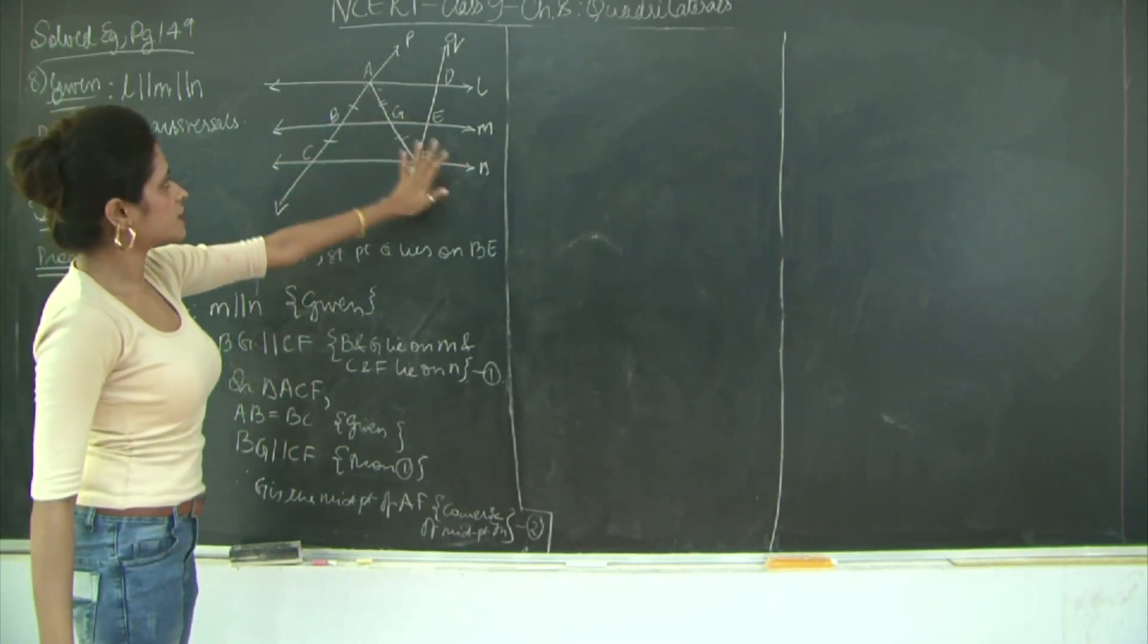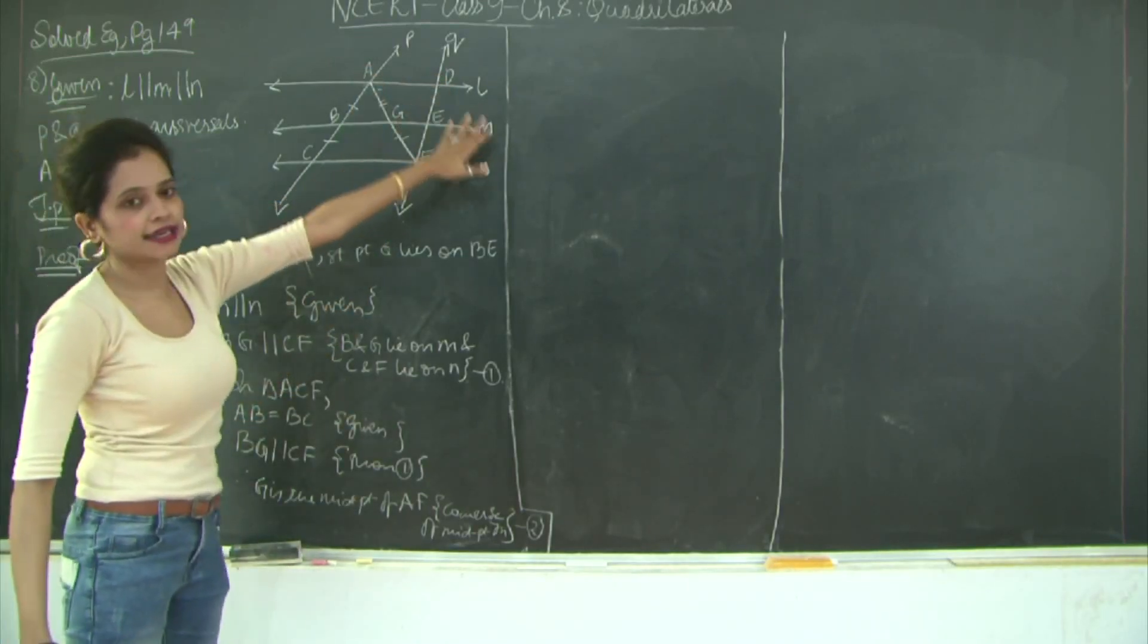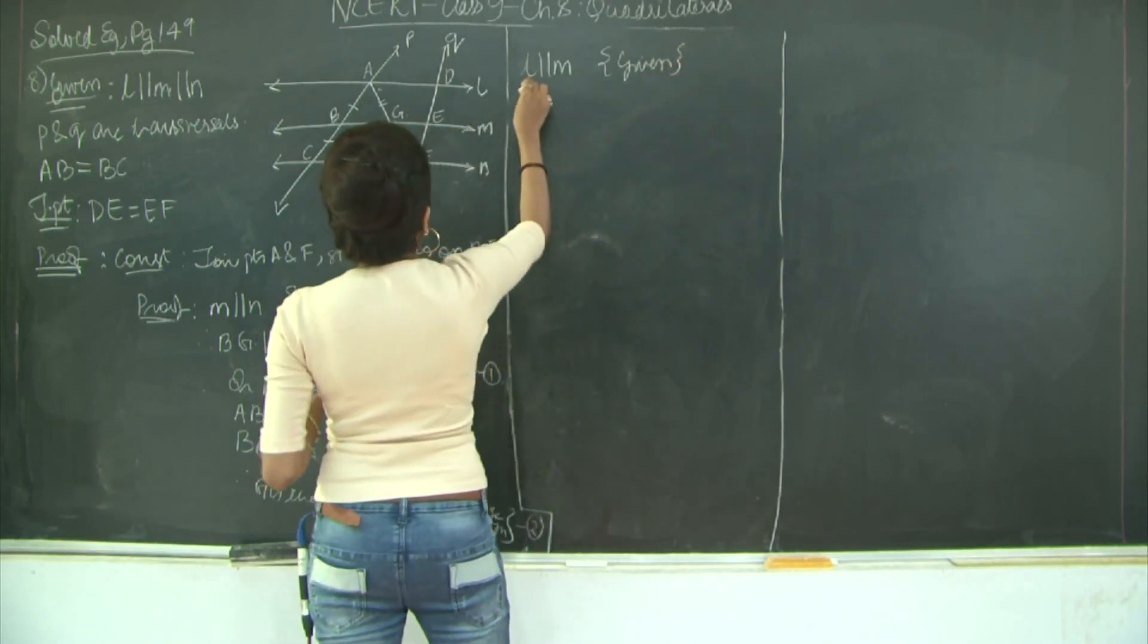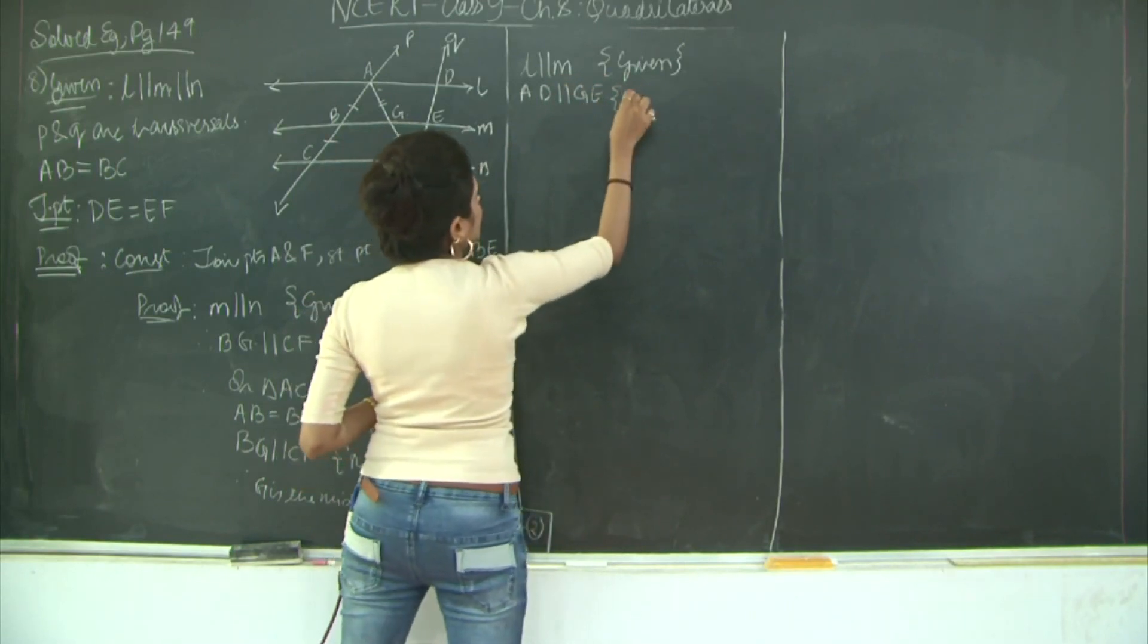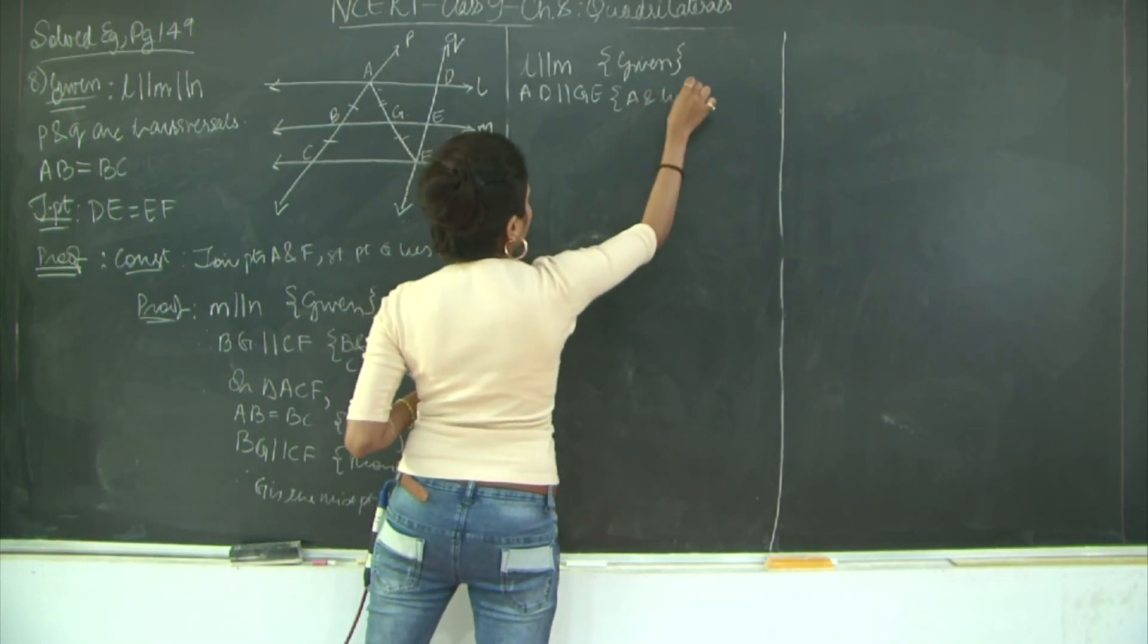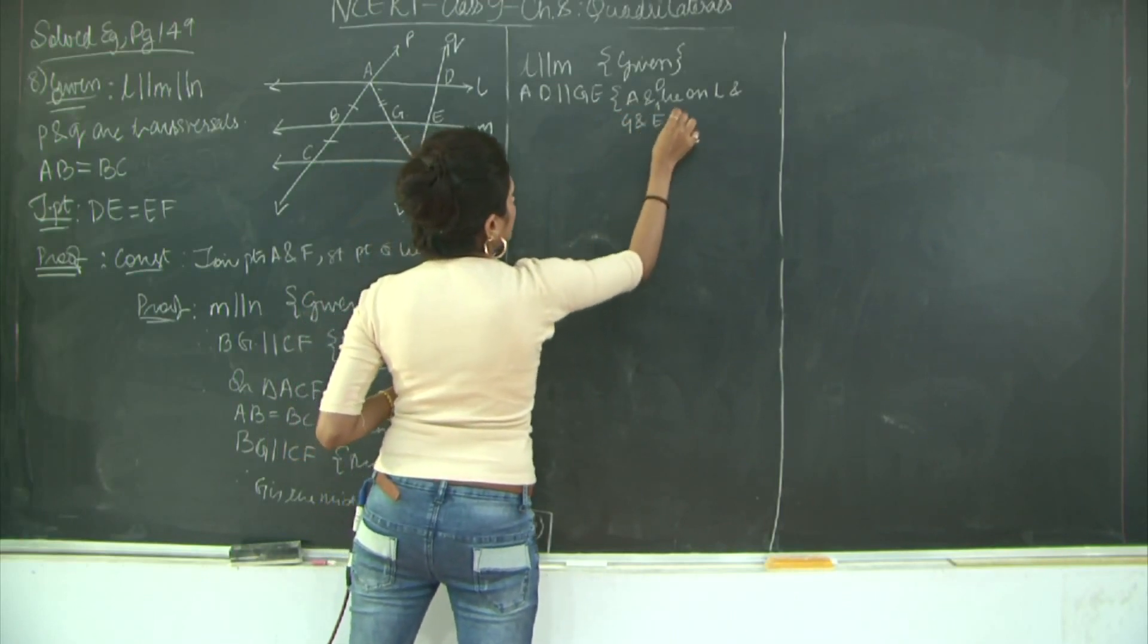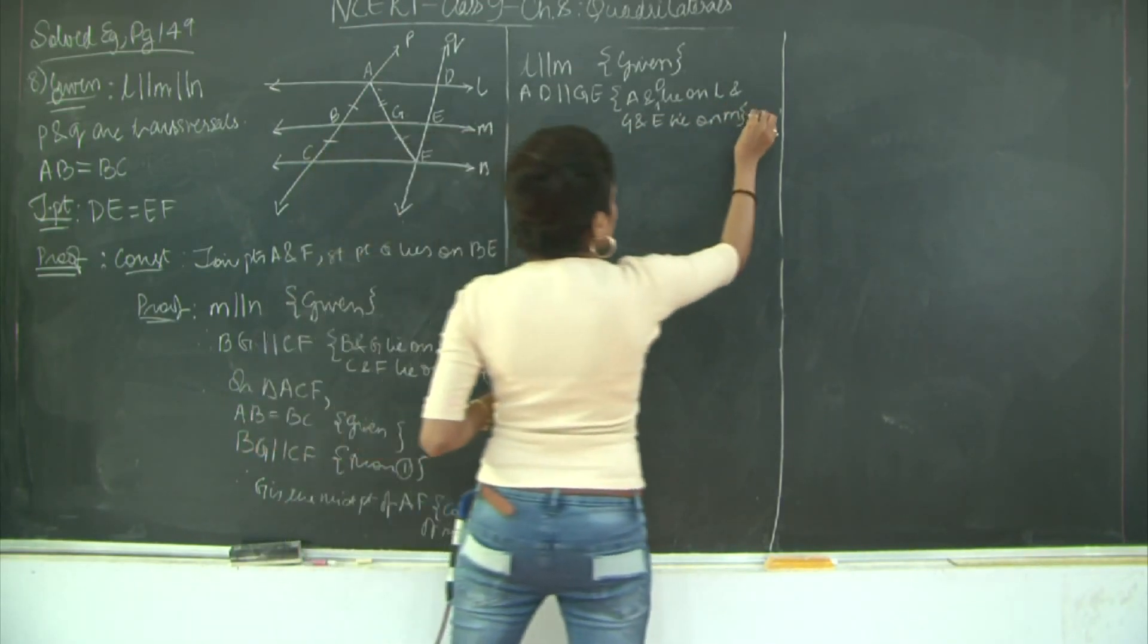Now let us look at the inverted triangle. We need to first show that EG is parallel to AD. So first I am going to say that L is parallel to M. This is given. Therefore, AD is parallel to GE. Why? Because A and D lie on L, and G and E lie on M. So let us mark this as 3.